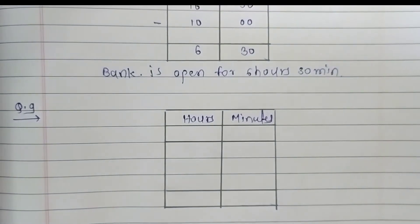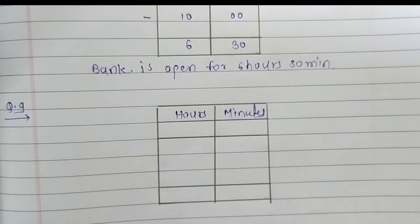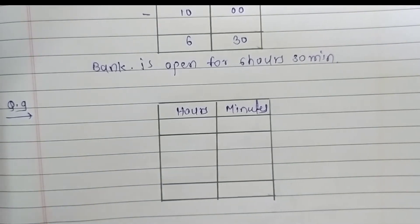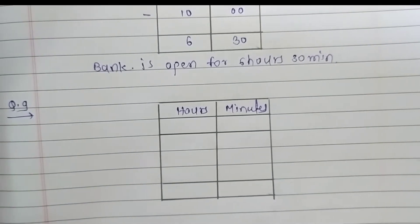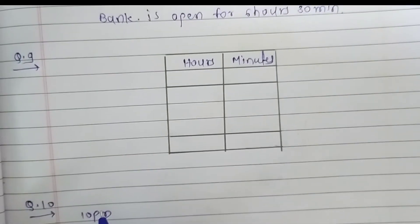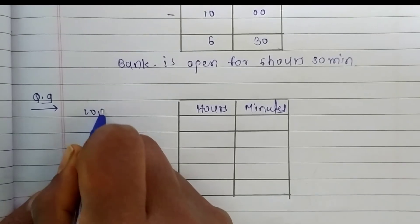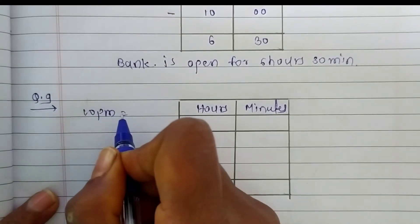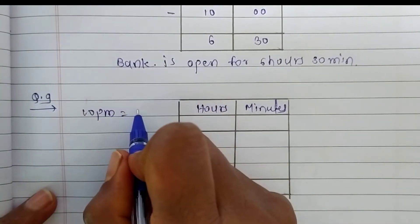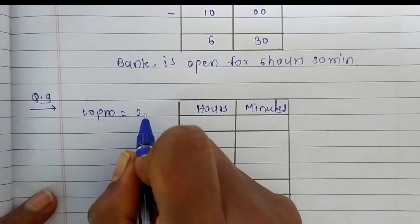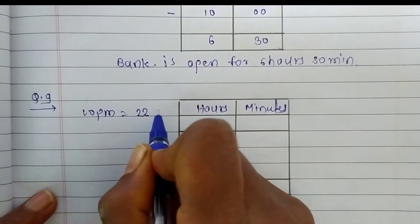So for it, we are going to convert 10 PM into 24 hour clock. So can we easily find 10 PM, 10 PM is equal to, in 24 hour clock, we return it as 22 hours.